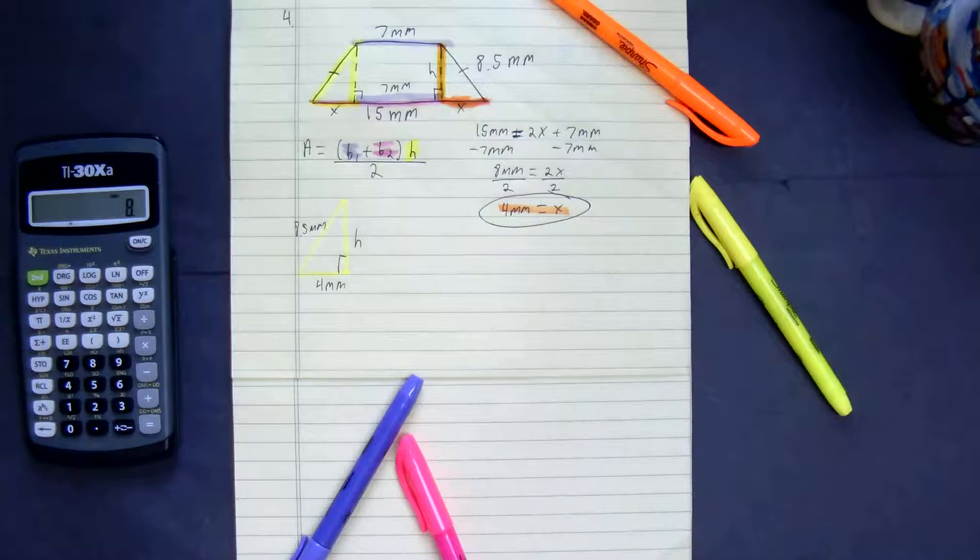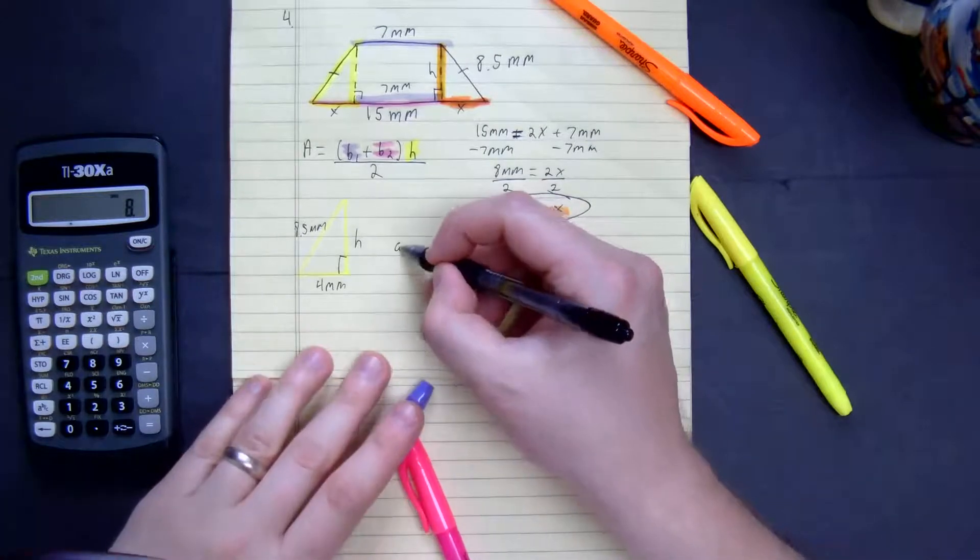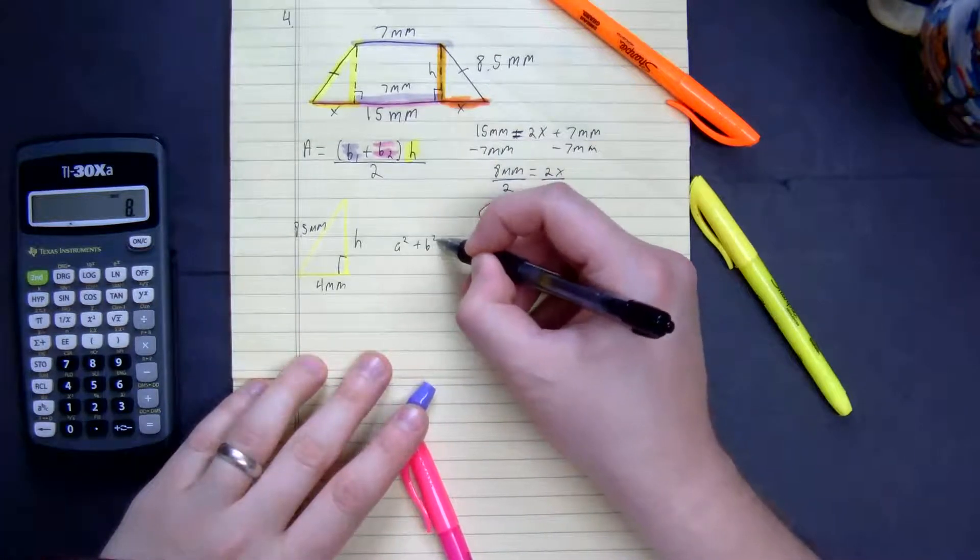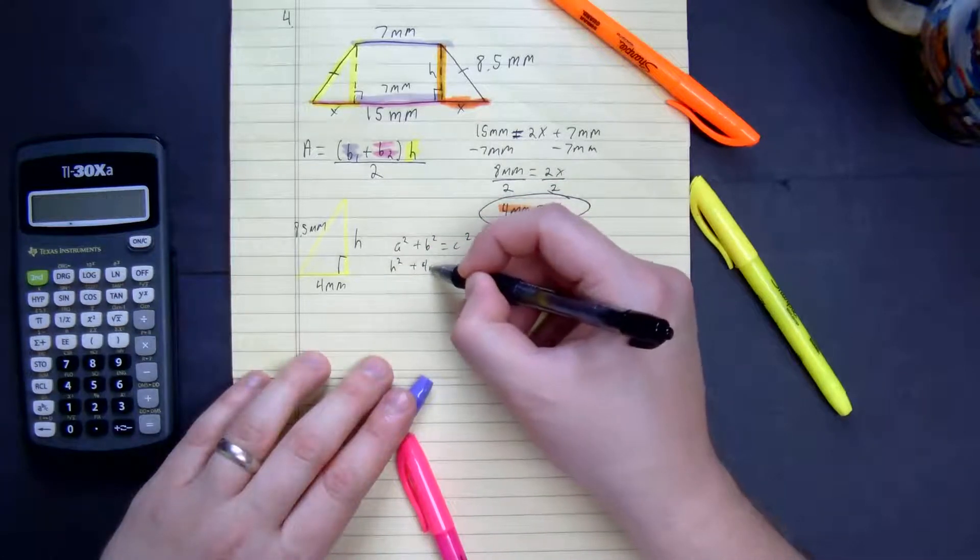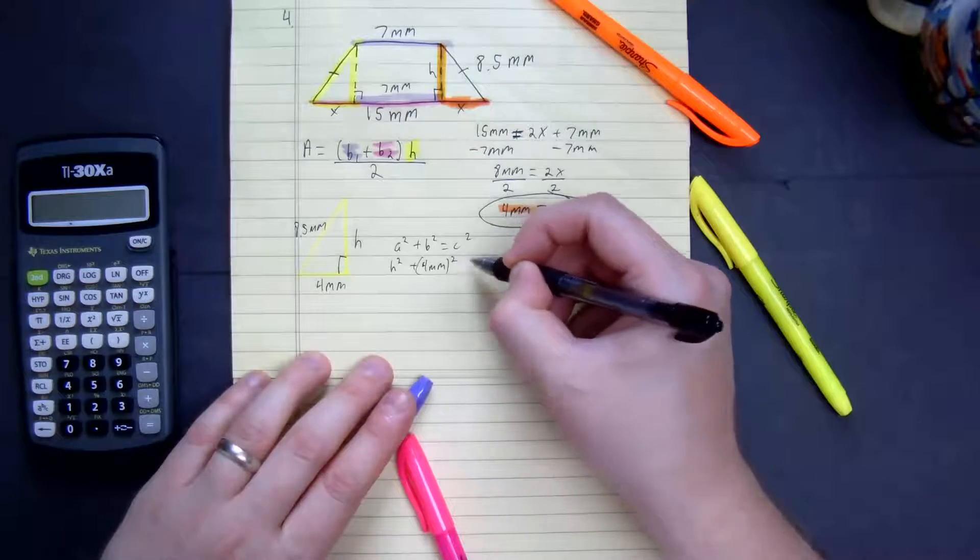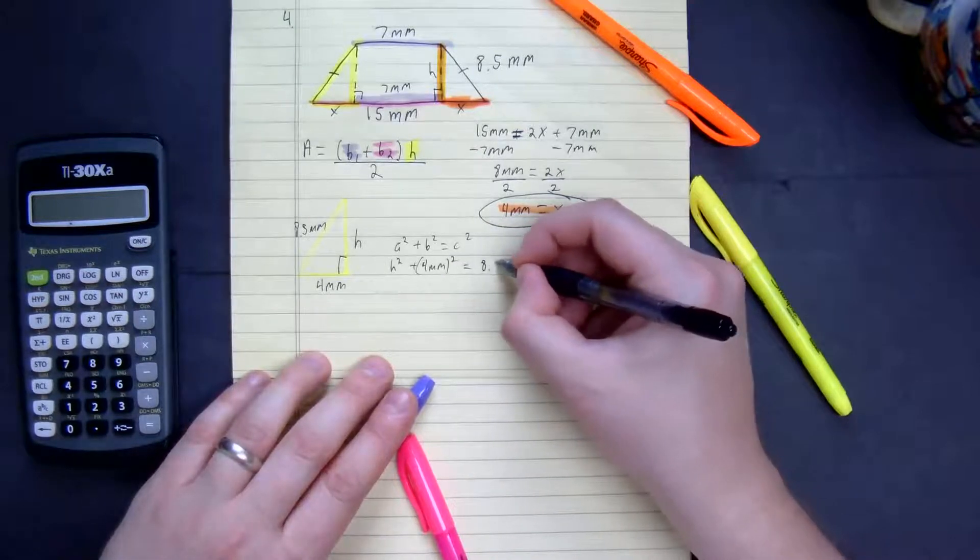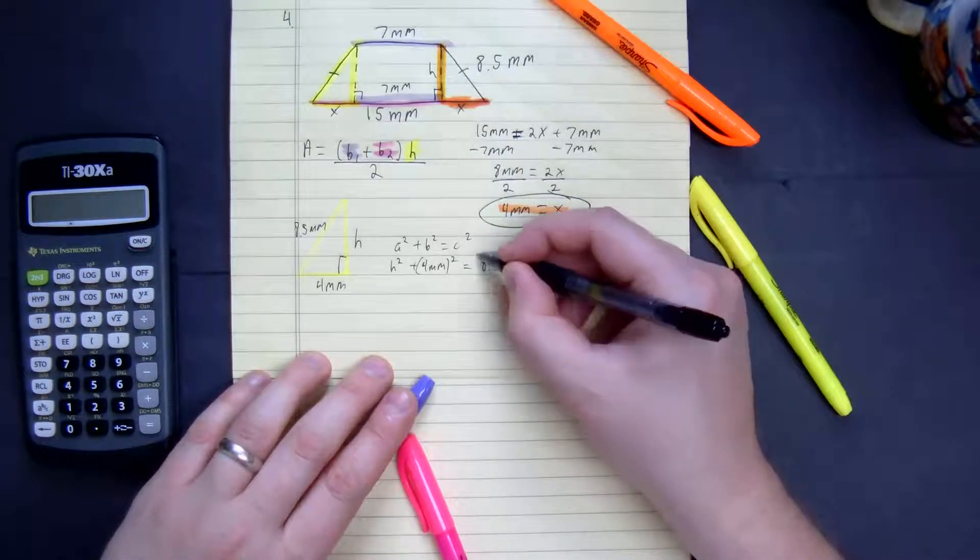So we're going to use the Pythagorean theorem. We're going to find the height. A squared plus b squared equals c squared. h squared plus 4 millimeters squared equals 8.5 millimeters squared.